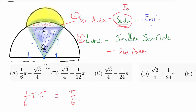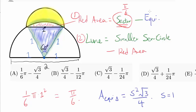Now we take away the area of the equilateral triangle. The area of an equilateral triangle with side length s is s² × √3 / 4. Since the side length is 1, the area of the equilateral triangle is √3/4. So the red area is π/6 − √3/4.